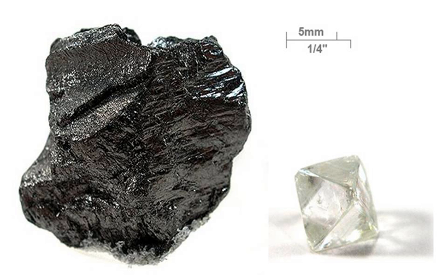Carbon is the fourth most abundant chemical element in the observable universe by mass after hydrogen, helium, and oxygen. Carbon is abundant in the Sun, stars, comets, and in the atmospheres of most planets. Some meteorites contain microscopic diamonds formed when the solar system was still a protoplanetary disk. Microscopic diamonds may also be formed by the intense pressure and high temperature at the sites of meteorite impacts. In 2014, NASA announced a greatly upgraded database for tracking polycyclic aromatic hydrocarbons in the universe. More than 20% of the carbon in the universe may be associated with PAHs, complex compounds of carbon and hydrogen without oxygen.